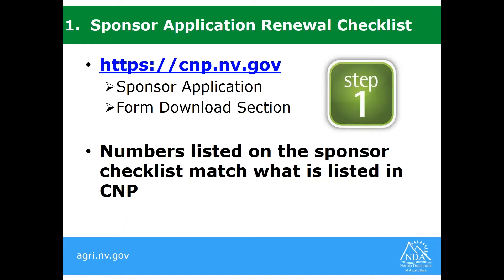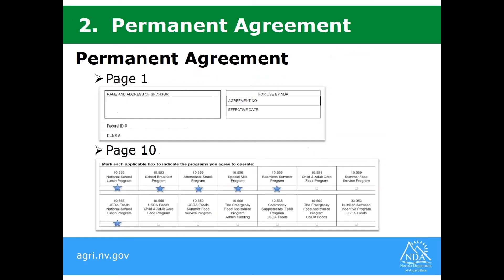If you want to pull out the applicable checklist — for those who are NSLP or RCCIs — they are available as handouts in the webinar. Number one for both NSLP and RCCI is the checklist itself, and we will be looking for that signed checklist submitted with your paper documents. You can find this checklist also on CNP under the Sponsor Application and the Form Download section. The numbers listed on the checklist are going to match what is listed in CNP, so you have a direct reference to those forms.